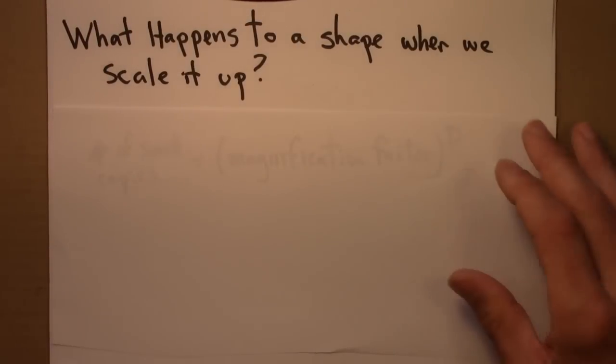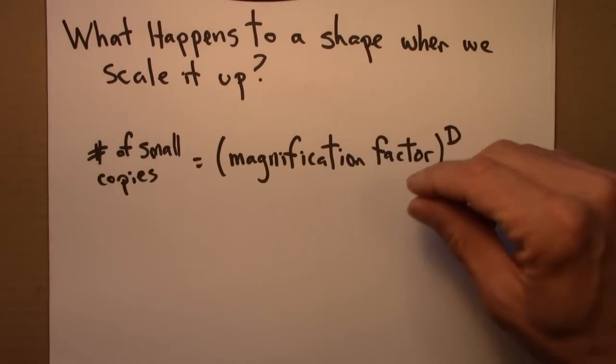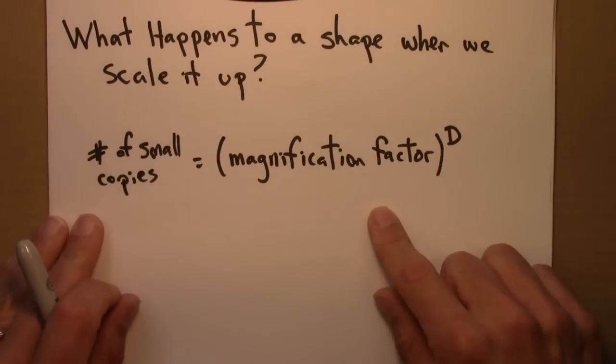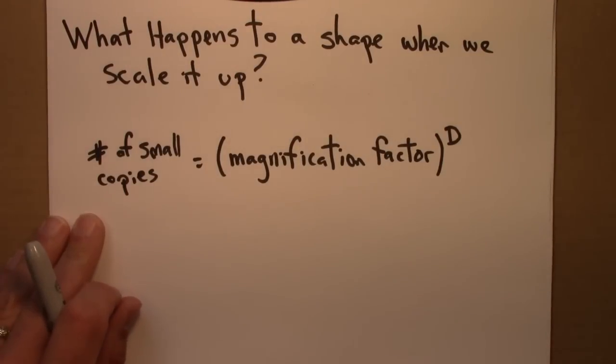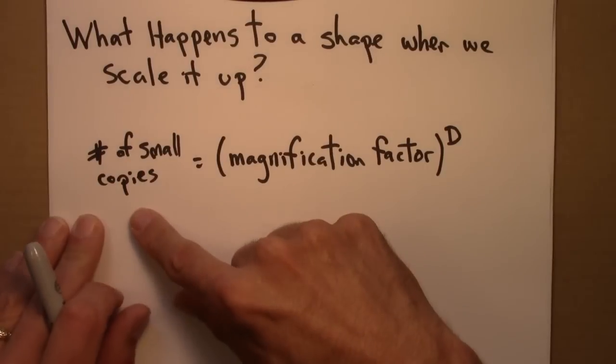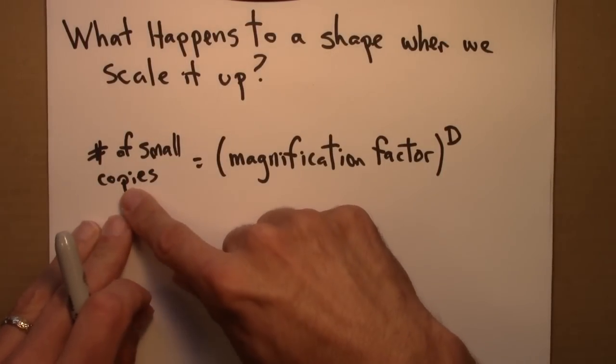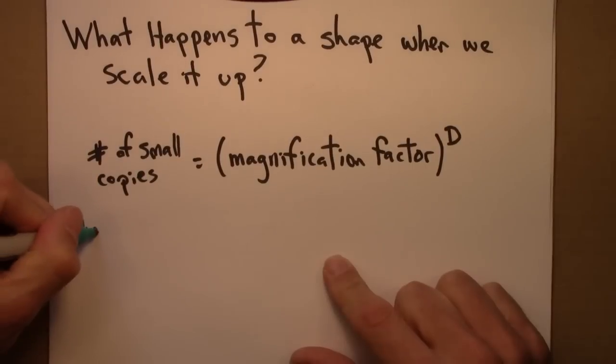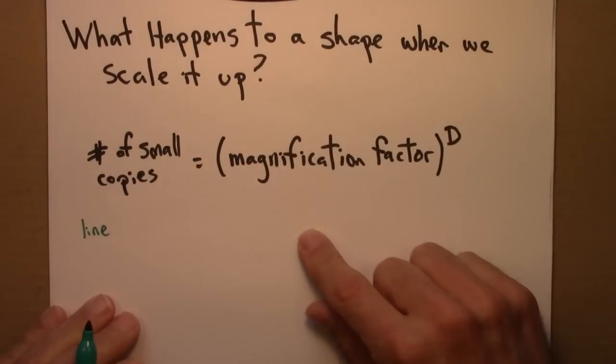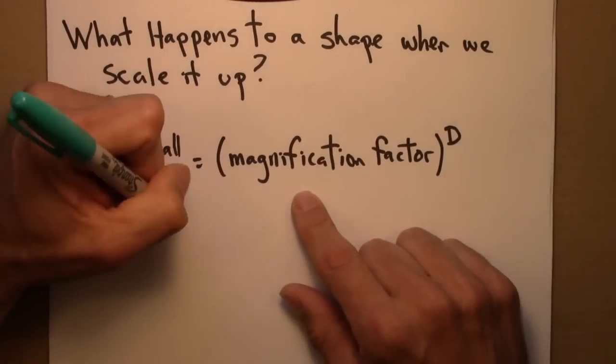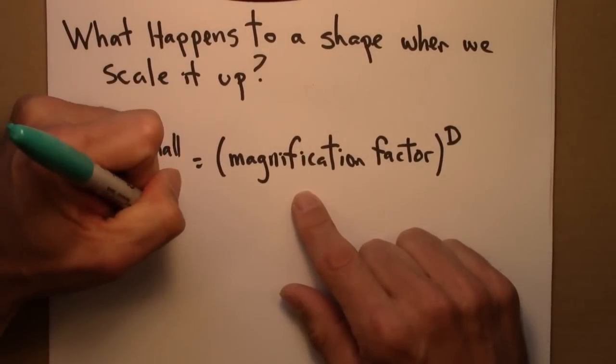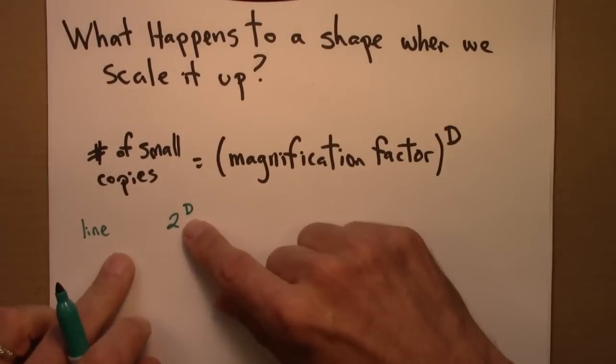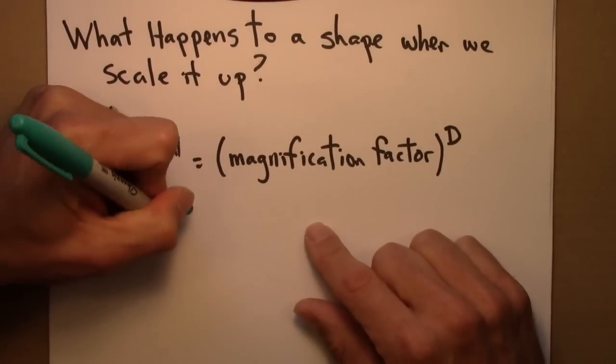And this is basically the same sort of calculation we did, same sort of thinking we did when we calculated the self-similarity dimension. Number of small copies equals magnification factor to the D. So for the line, we have, when we magnify it, so we double it, two to the D.